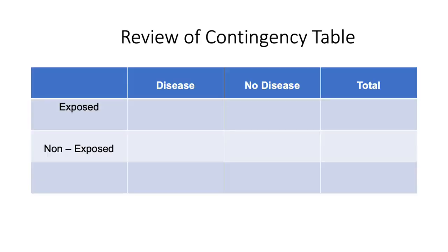This is a quick review of contingency tables. If you would like to learn more about how they are constructed, kindly review the video labeled contingency tables. Contingency tables have four categories based on both the exposure and disease status, along with their respective total columns. They are used to calculate measures of association such as risk ratios, rate ratios, and odds ratios.